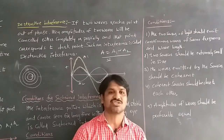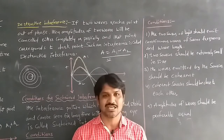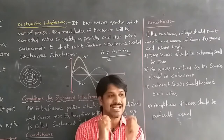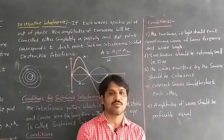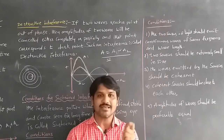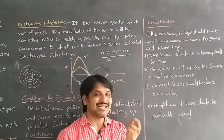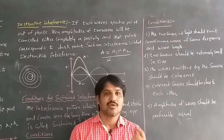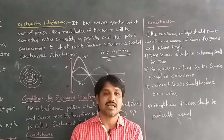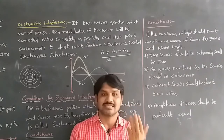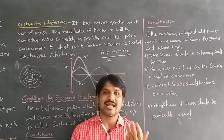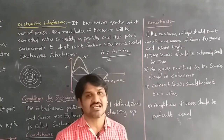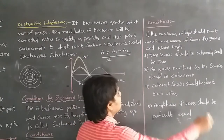If our eye is sustained — meaning not strained — and the connection is stable, and the waves are coming with the same frequency and same wavelength, then it can be said that is sustained interference.